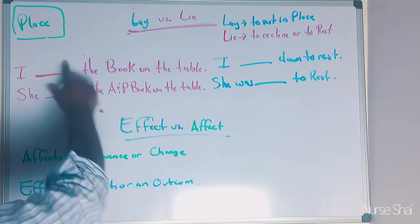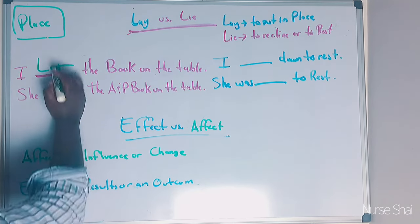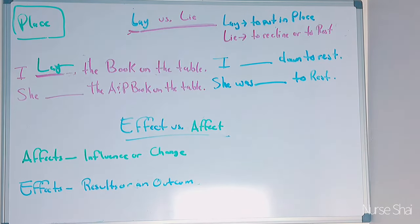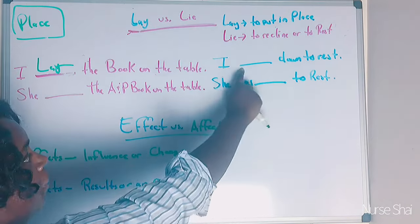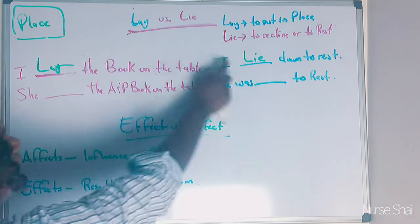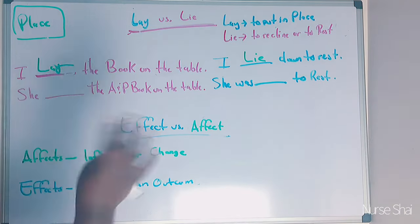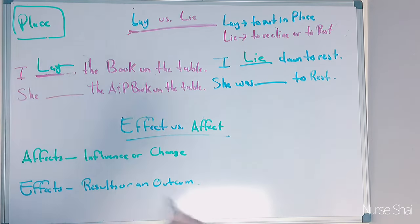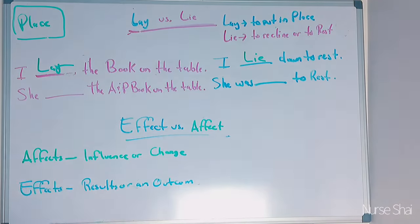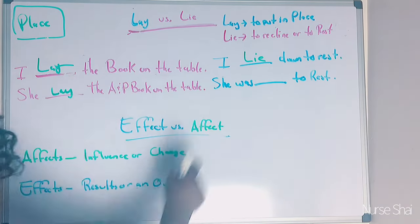The next one: 'I blank down to rest.' This sentence is talking about resting — 'I placed down to rest' wouldn't make sense. So we use 'lie': 'I lie down to rest.' Another example: 'She blank the A&P book on the table' — 'She placed the A&P book on the table' makes sense, so you use 'lay': 'She laid the A&P book on the table.'